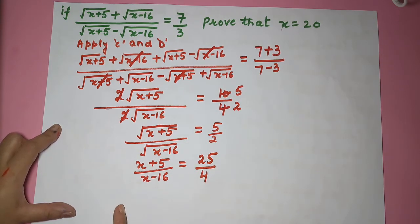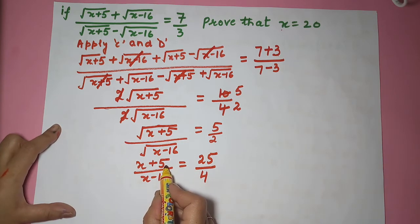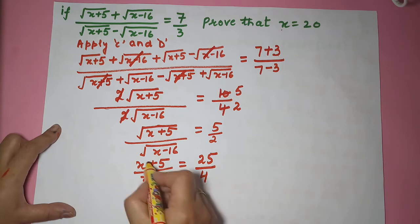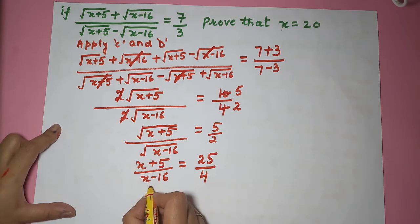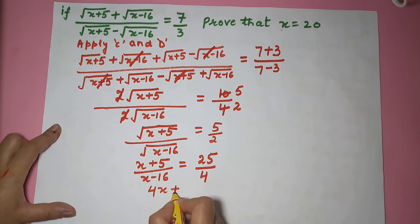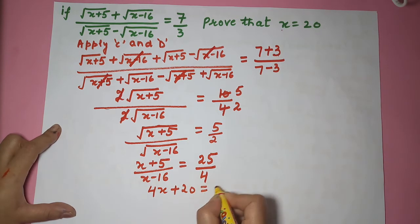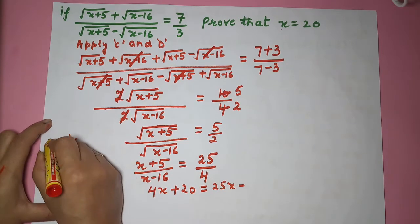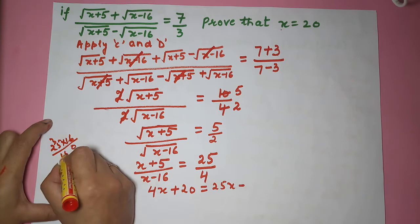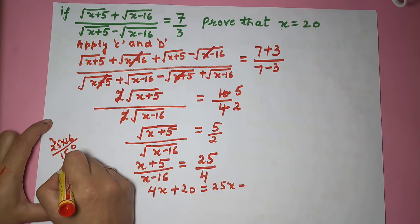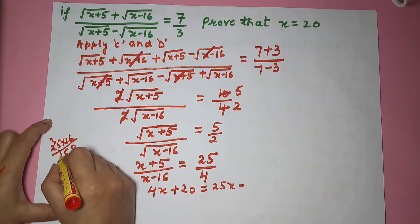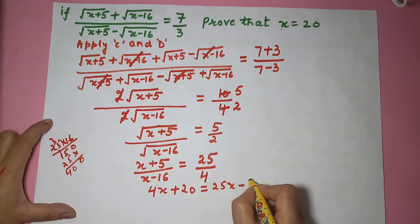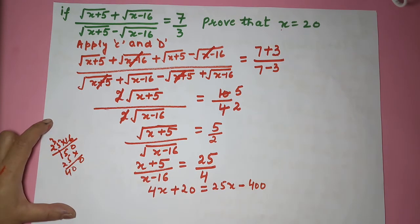Now here again we have a choice: you can either use componendo and dividendo to get the value of x, or you can simply cross multiply. Let's cross multiply. So I am getting 4x plus 20 is equal to 25x minus — 25 into 16 is 400.